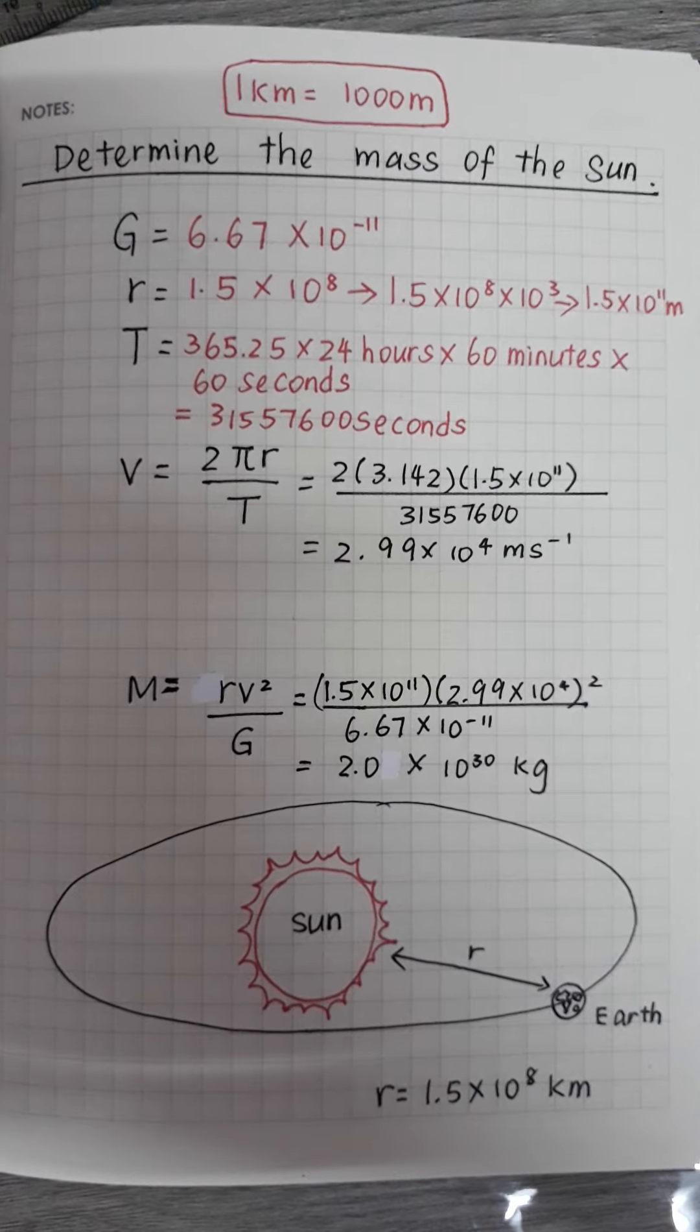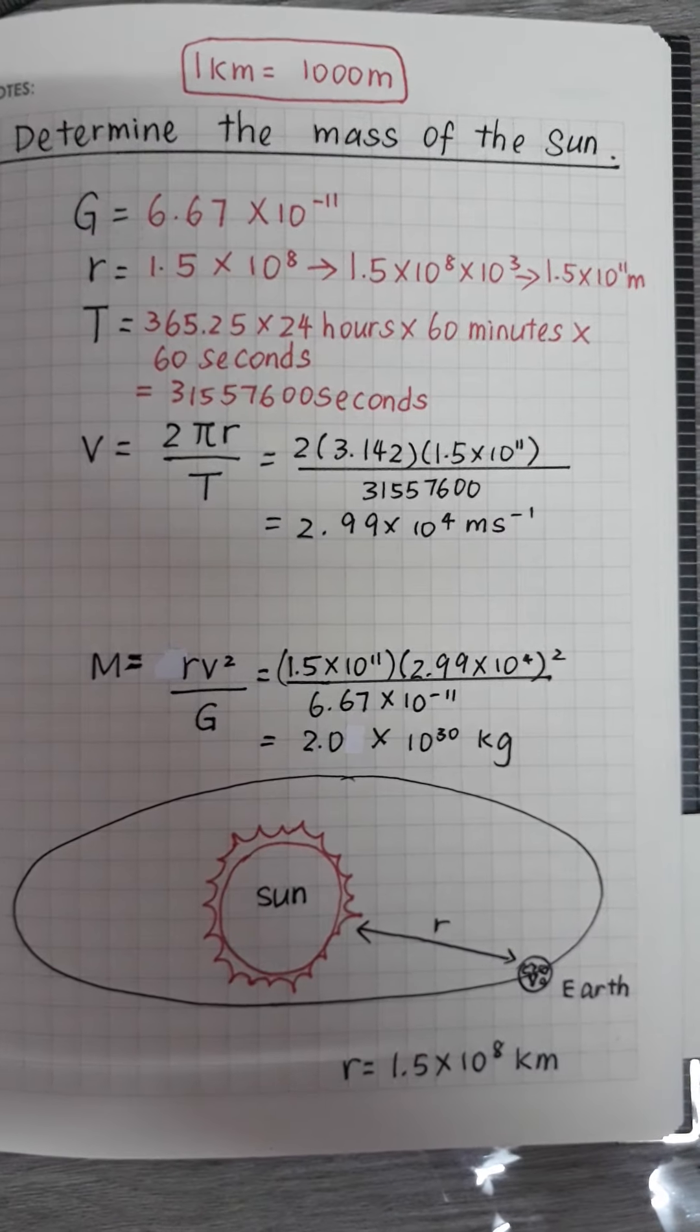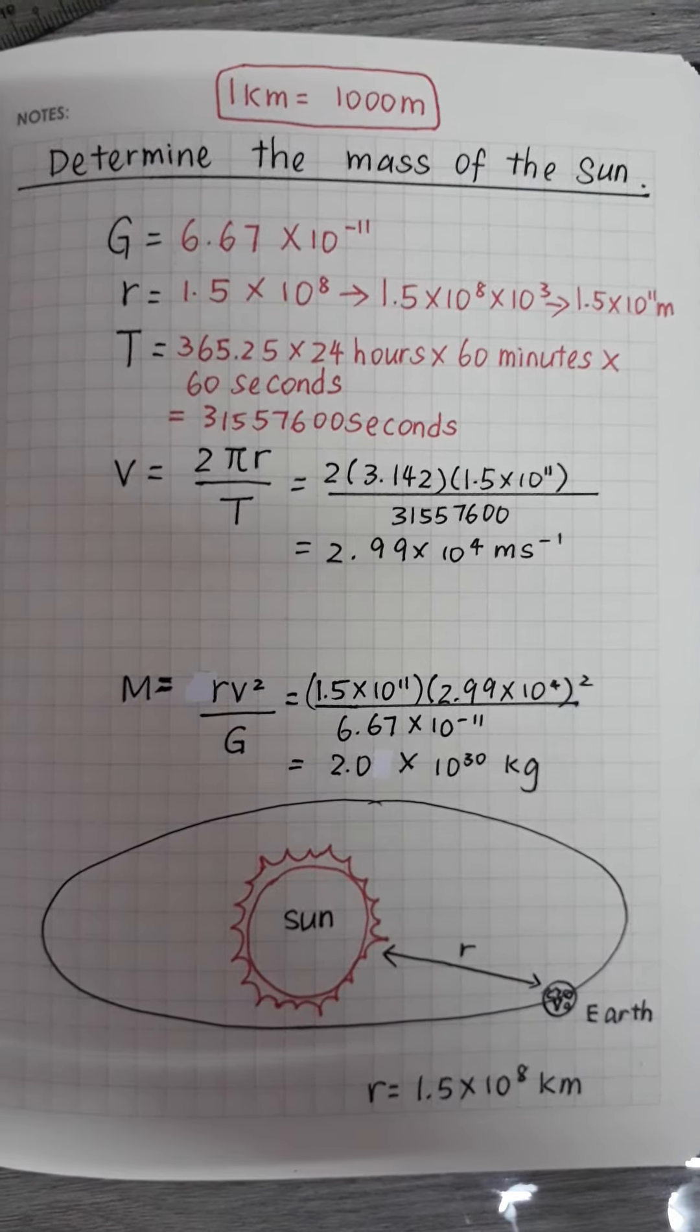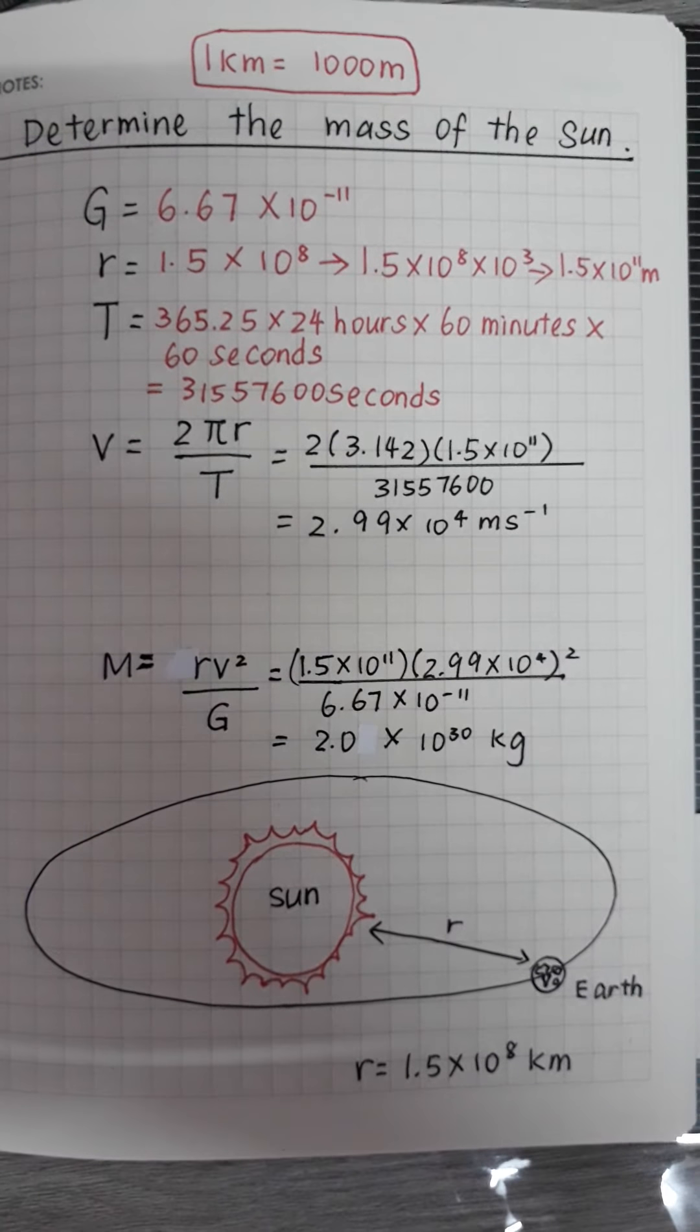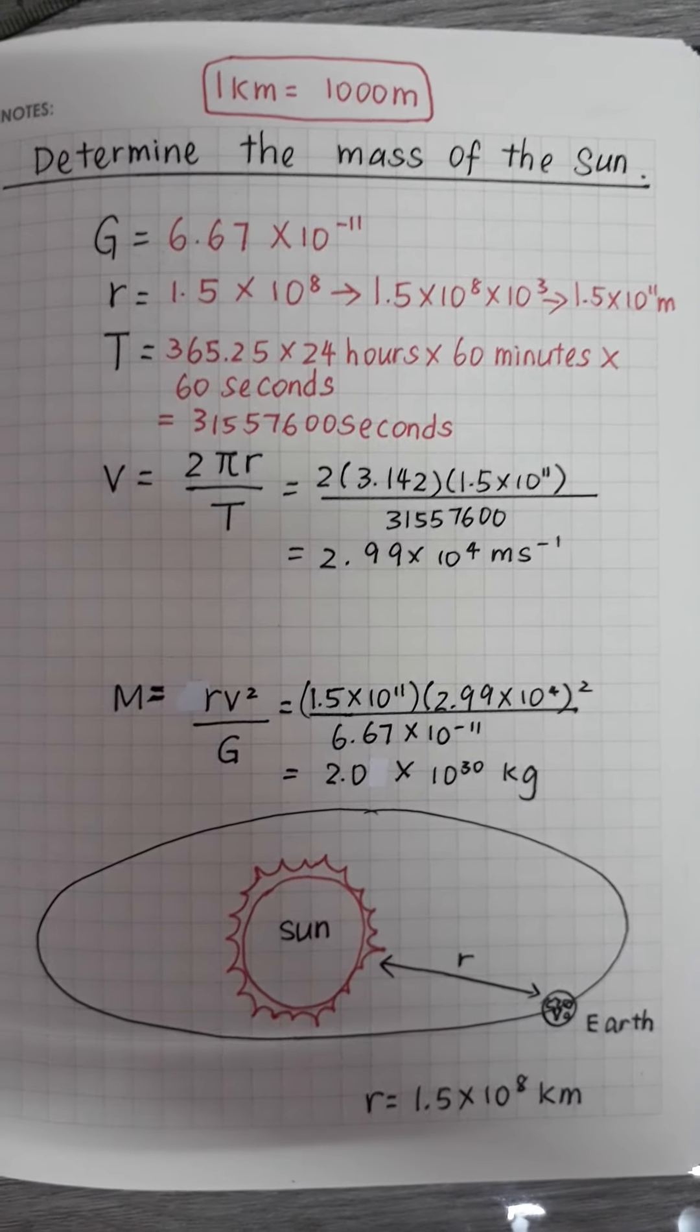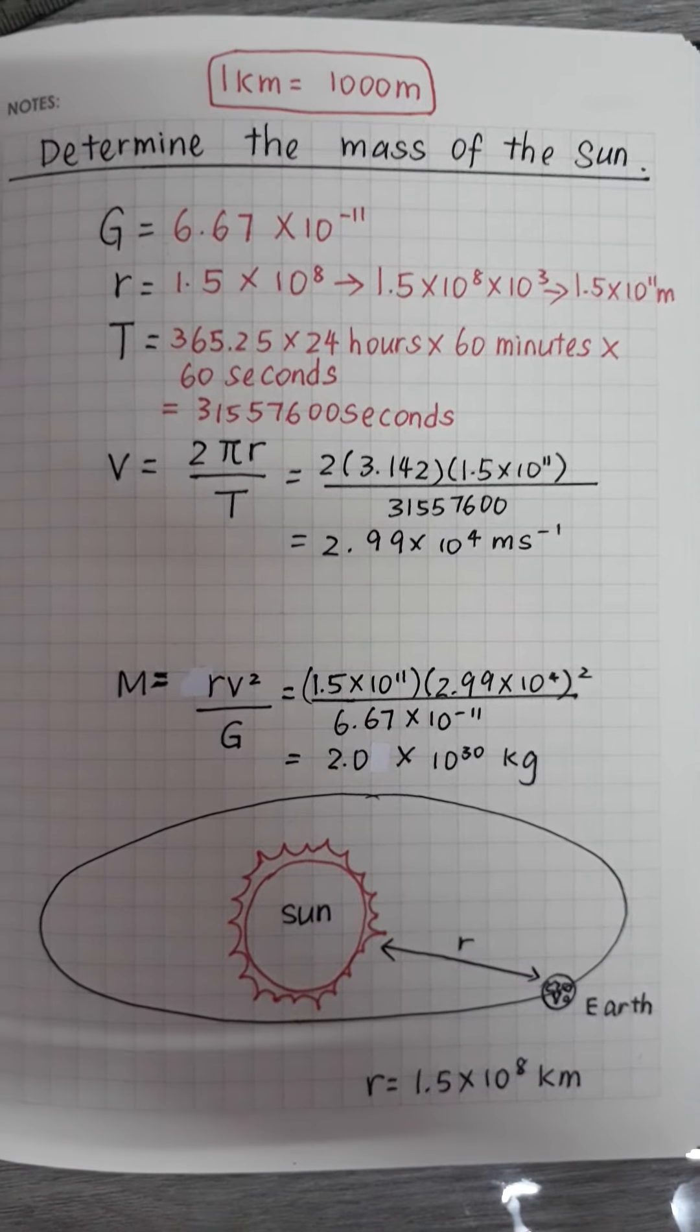Gravitational constant is 6.67 times 10 power of negative 11. R, which is the radius, is 1.5 times 10 power of 8 kilometers. However, in physics we have to use meters, so 1.5 times 10 power of 8 times 10 power of 3. Since we know that 1 kilometer equals 1000 meters, we have to times 10 power of 3.